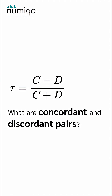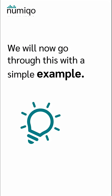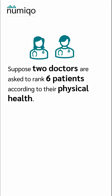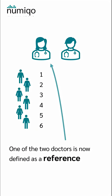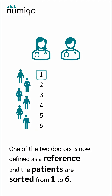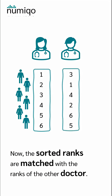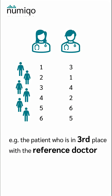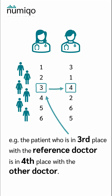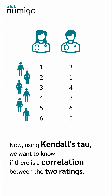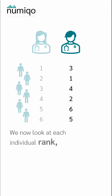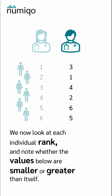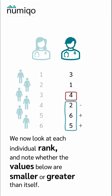What are concordant and discordant pairs? We will now go through this with a simple example. Suppose two doctors are asked to rank 6 patients according to their physical health. One of the doctors is defined as a reference and the patients are sorted from 1 to 6. The sorted ranks are then matched with the ranks of the other doctor — for example, the patient in 3rd place with the reference doctor is in 4th place with the other doctor. Using Kendall's Tau, we want to know if there is a correlation between the two ratings, and for this we only need these ranks.